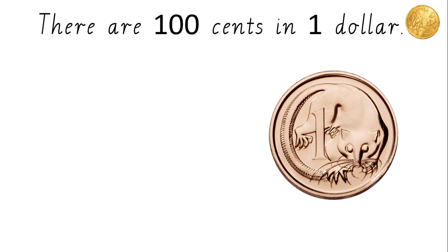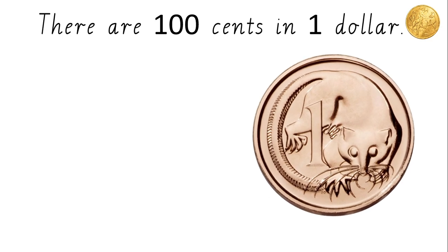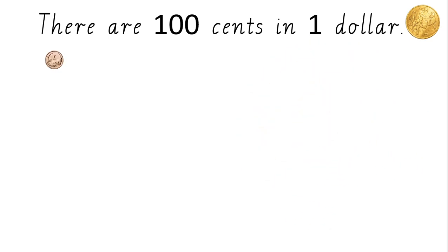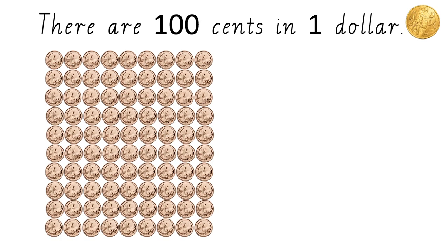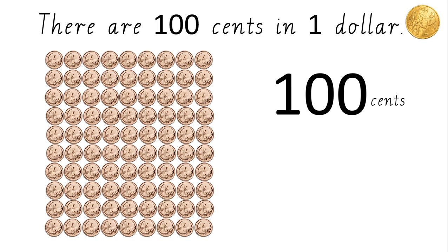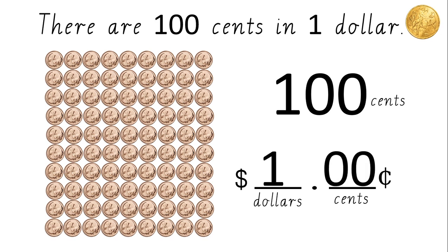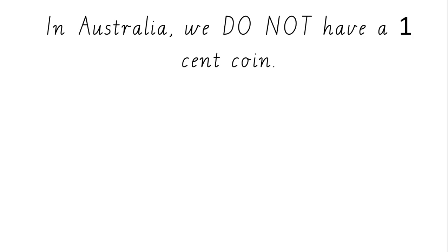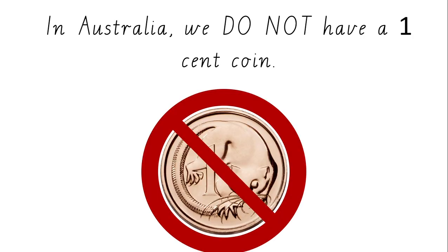There are one hundred cents in one dollar. Imagine that Australia had a one cent coin — we would need one hundred one-cent coins to build up to one dollar. That's a lot of loose change to keep in your pocket! One hundred cents is the same as one dollar. In Australia, we do not have a one cent coin.